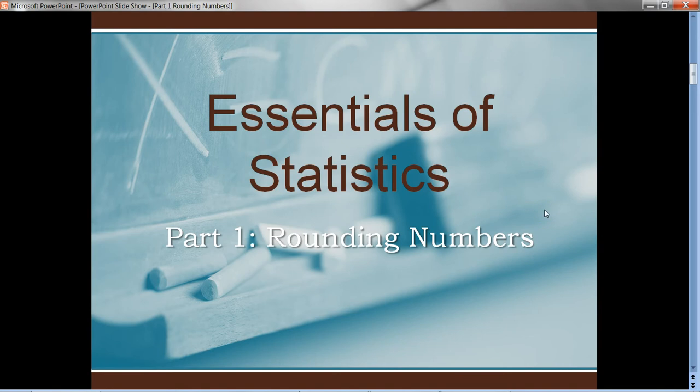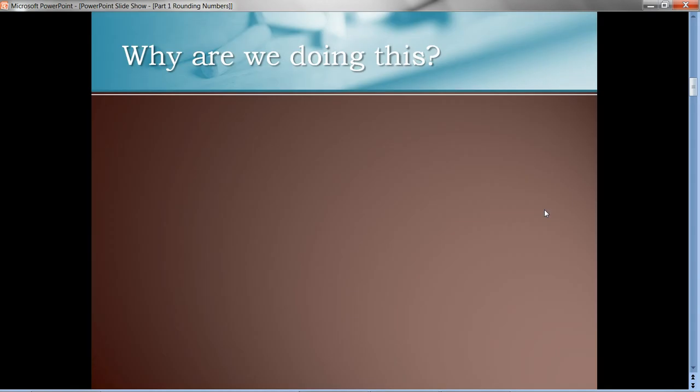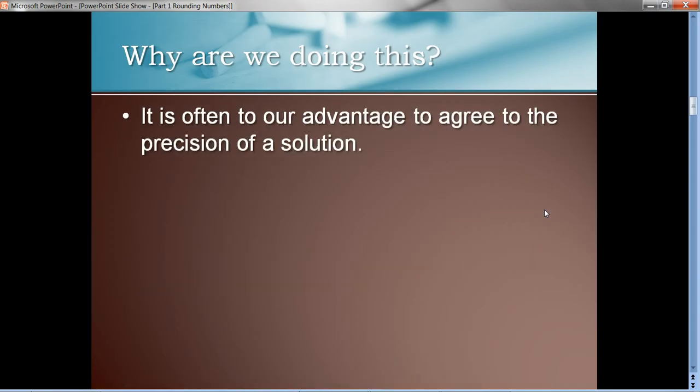Now, let's take a minute before we actually get into it and determine why we're actually doing this. First, it's to our advantage to agree on the precision of some sort of solution. For example, if we're computing the average of some numbers, we usually round to one more place than the given data.